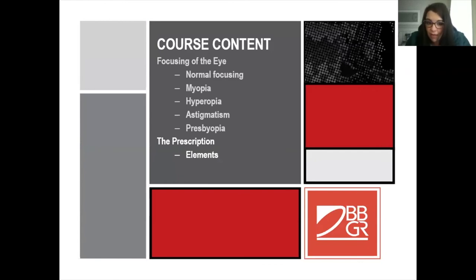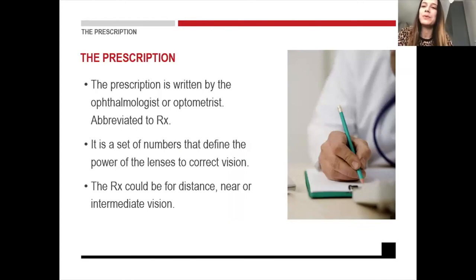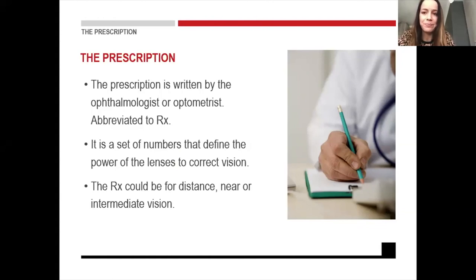So that's everything from my side. I'm going to hand over to Aletia now — she's going to discuss elements of the prescription with you. Good morning, everybody. So let's look at the prescription. The prescription is usually written by your ophthalmologist or optometrist with the abbreviation RX. It is a set of numbers that defines the power of the lenses to correct the vision. The RX could be for distance, near, or intermediate vision.